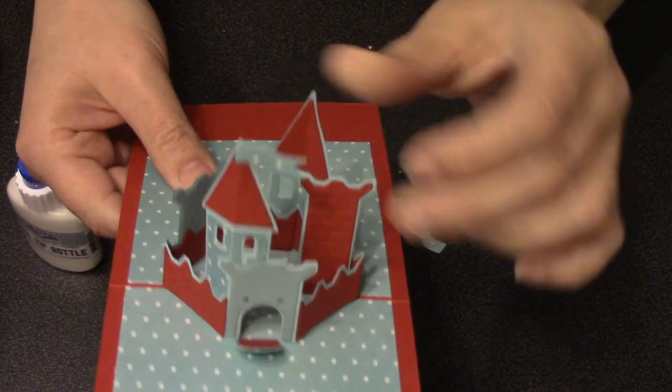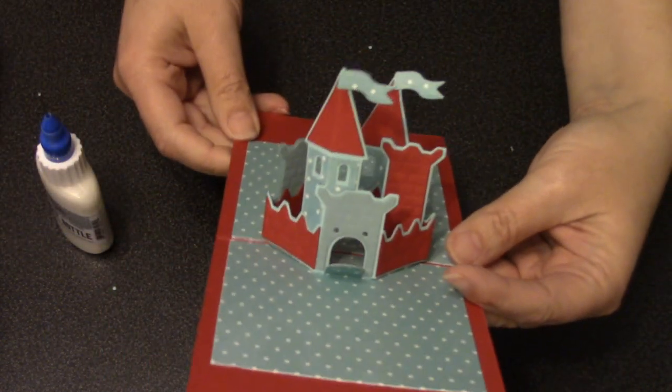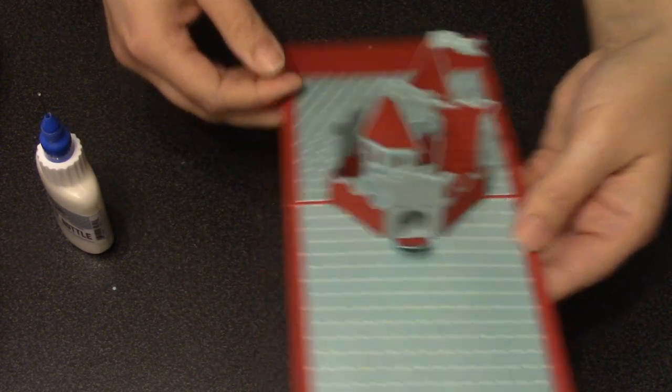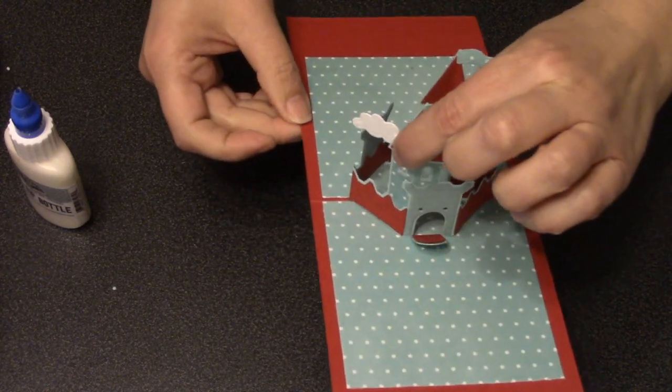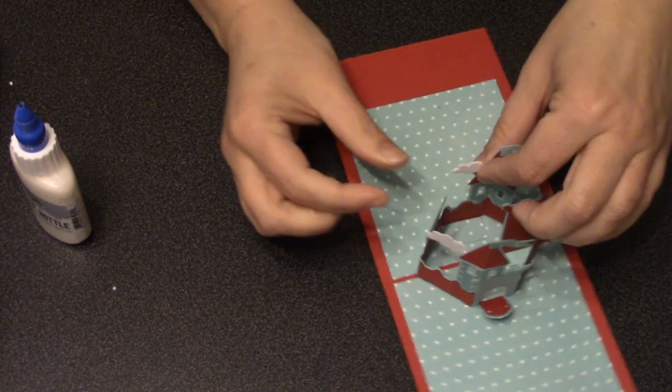The die set includes two identical flag dies, and those look great attached to the top of the pointy roofs. And then there are two cloud dies in the set, and those are also optional, but they look great attached to the castle as well. It really gives it that feeling of being a very tall castle with its towers up in the clouds.